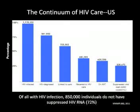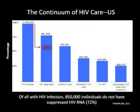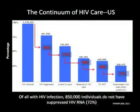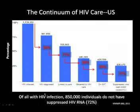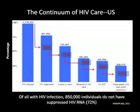Unless you think this is only a problem in Africa, let's look at the United States. We have the same challenge. Of an estimated 1.1 million people living with HIV, only about 80% know they're HIV-infected. Of those, about 77% are linked to HIV care, and you can see what happens as the cascade goes down. Of all HIV infections in the United States — estimated 1.1 million — 850,000 individuals don't have suppressed viral load. The majority of people in the United States are not achieving optimal outcome. This is about measuring quality of programs.